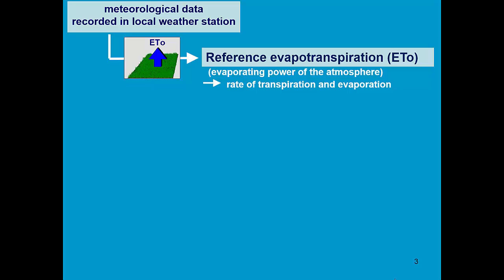AquaCrop has a built-in ET node calculator, which computes reference evapotranspiration from meteorological data.